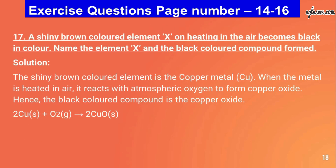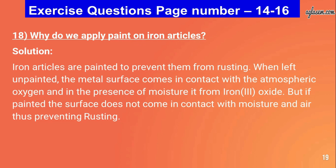Question number seventeen: a shiny brown colored element X on heating in air becomes black in color. Name the element X and the black colored compound formed. The answer is: the shiny brown element is copper (Cu). When heated in air it reacts with atmospheric oxygen to form copper oxide. The black colored compound is copper oxide (CuO). The reaction is: 2Cu(s) + O₂(g) → 2CuO(s).